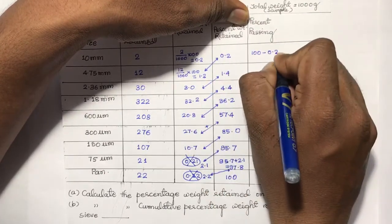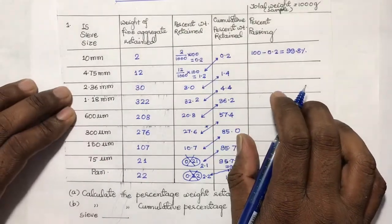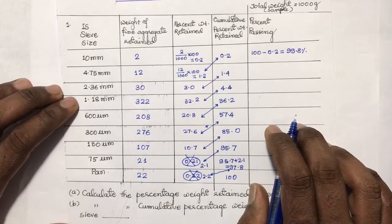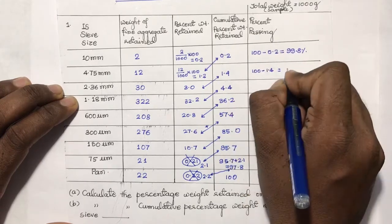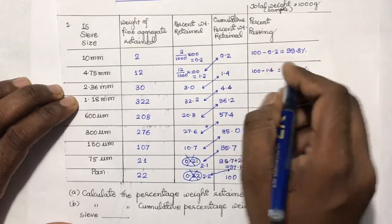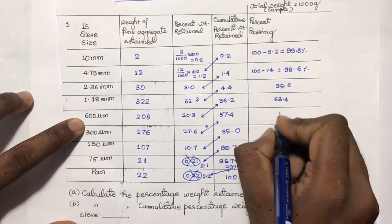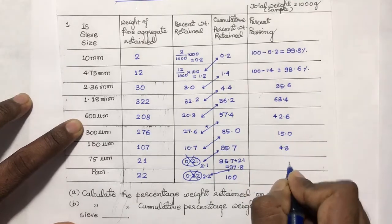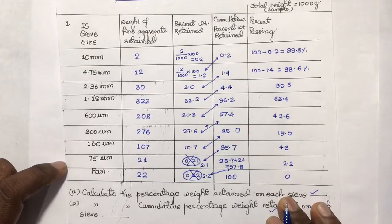So 99.8% has passed through the 10 mm sieve. Subtracting 1.4 from 100 gives 98.6% for the 4.75 mm sieve. Similarly, the remaining values are 95.6%, 63.4%, 42.6%, 15%, 4.3%, 2.2%, and 0%. That's the end of this lecture — I hope you enjoyed it, and kindly don't forget to subscribe. Thank you very much.